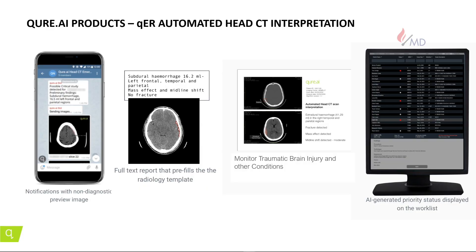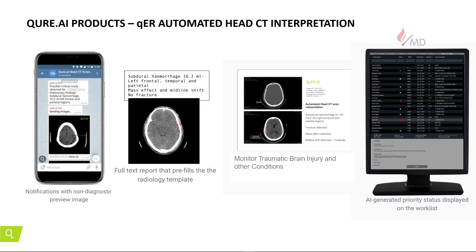A second product that we have is interpretation of head CT scans to detect trauma and stroke cases. We integrate directly with the CT scanner, and as soon as we see a CT scan with a critical finding — such as a bleed, a fracture, midline shift, mass effect, or an infarct — we alert the radiologist within a minute on a mobile phone. It's a Telegram message, very similar to WhatsApp. We send the details of the case, for example reporting a subdural hemorrhage of 16.5 mL auto-detected in the left frontal and parietal regions, along with key slices.